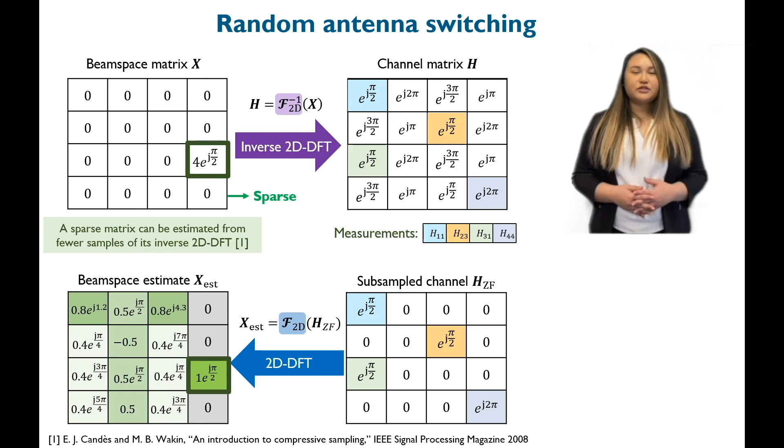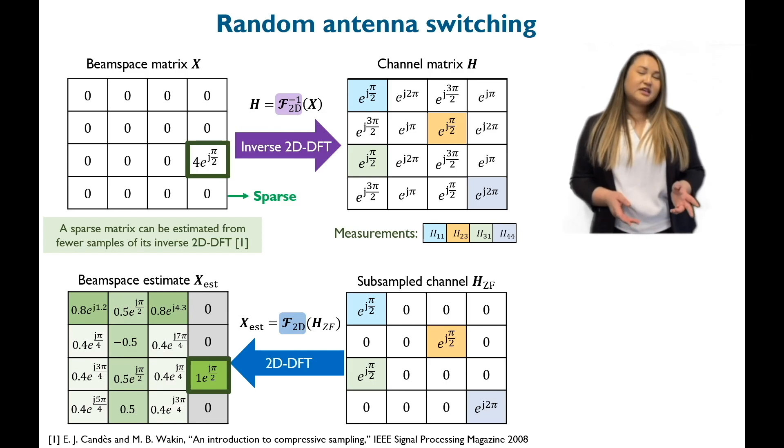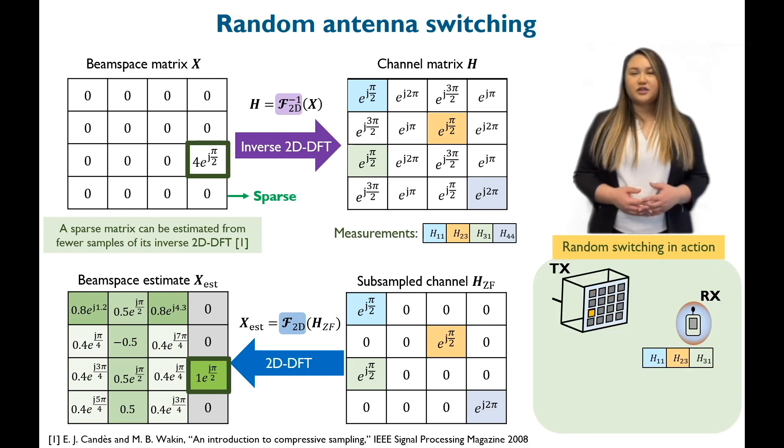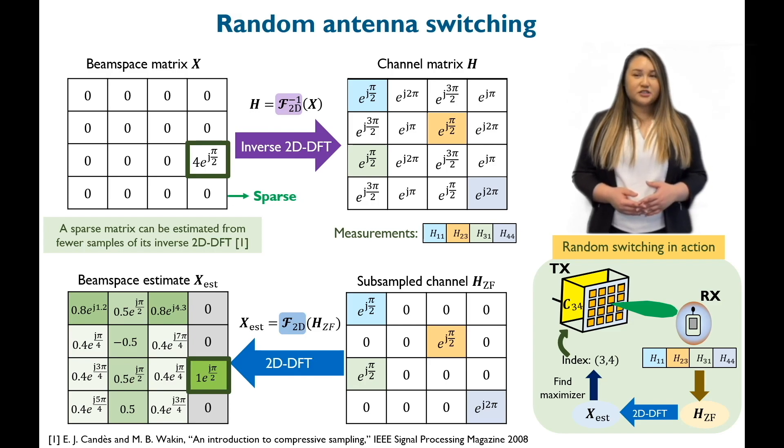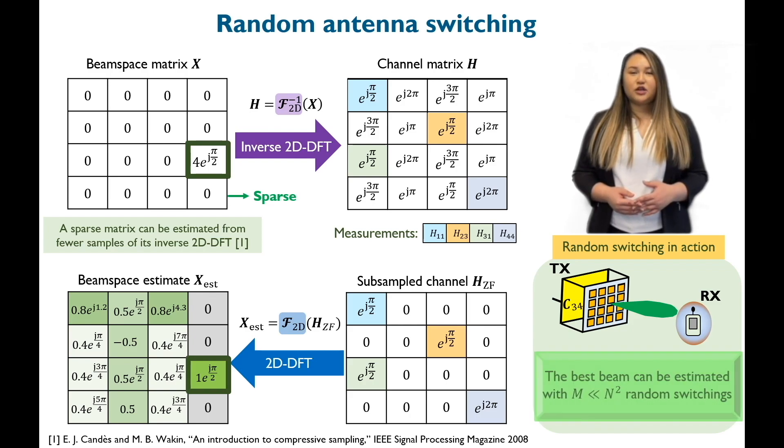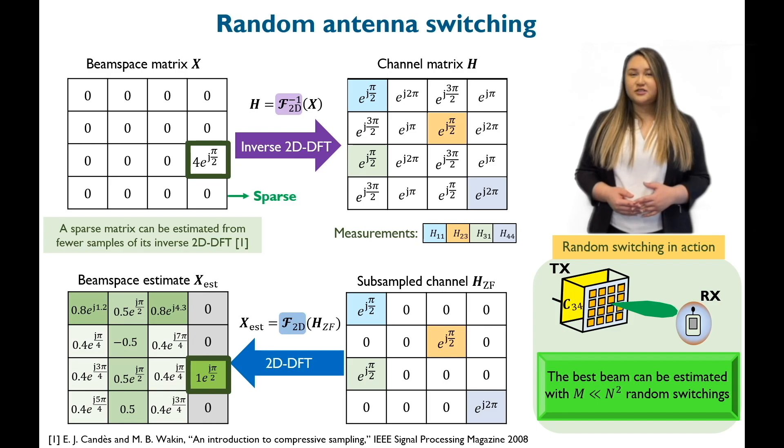Now, can the receiver acquire subsamples of the channel? Yes, it is possible when the transmitter sequentially turns on the antennas corresponding to the subsampling coordinates. With this method, the best beam is estimated from just four transmissions. As a result, beam alignment using the Fourier transform of the subsample channel results in lower training overhead than exhaustive search.